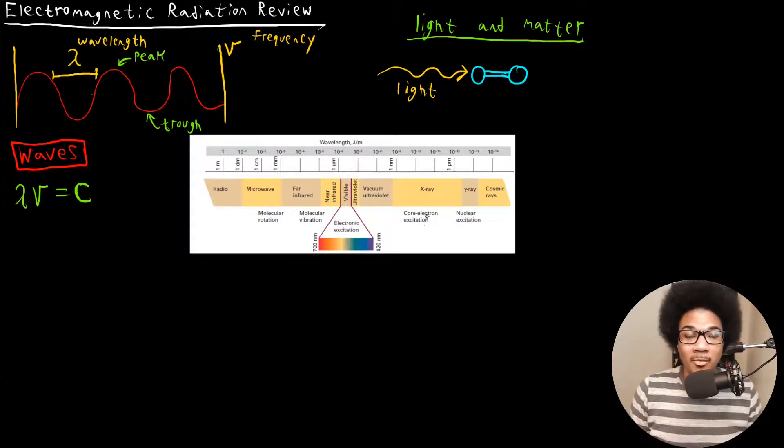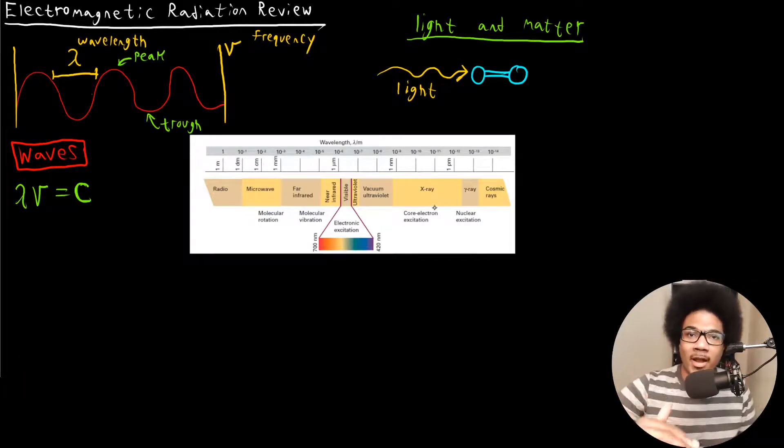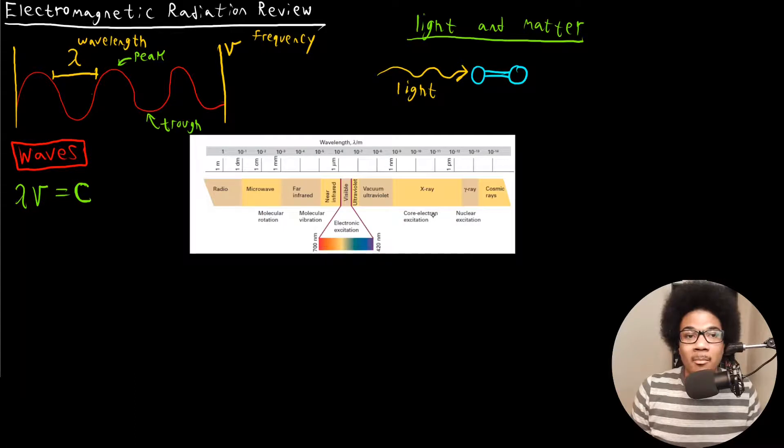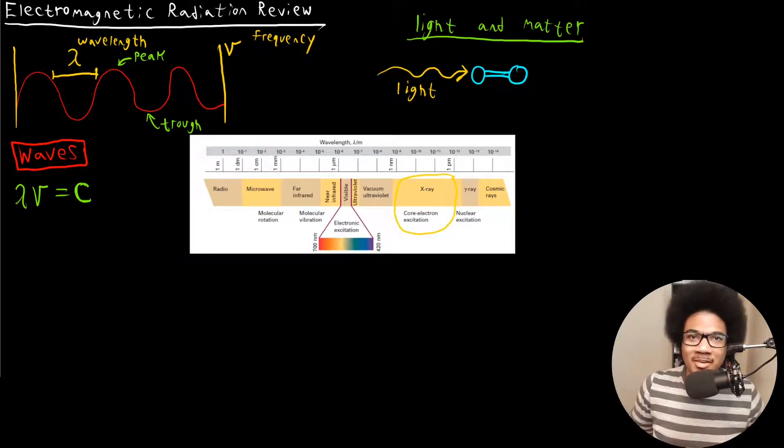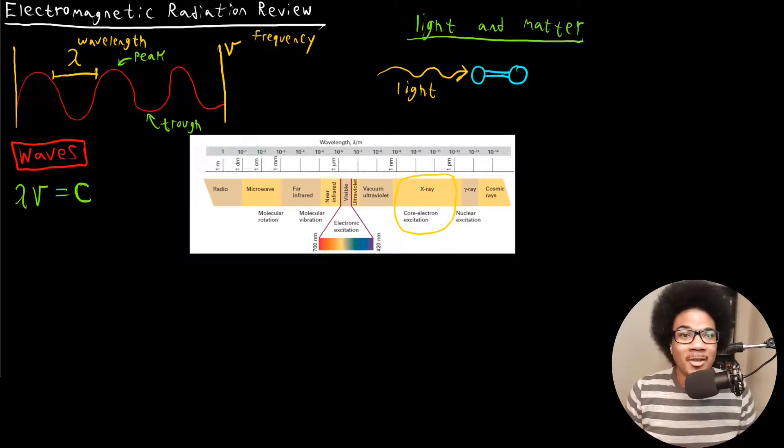As you go to the X-ray region, you're still exciting electrons, but those electrons are going to be further down in the electron configuration. So core electrons, like the 1s electrons in a molecule, you're going to start exciting those electrons. And this is a really interesting field, this X-ray spectroscopy. This is actually what my entire PhD dissertation was about. I built computational models that studied this core electron excitation that happens when you shine X-ray radiation on molecules. My whole dissertation was about that.